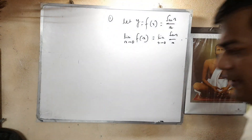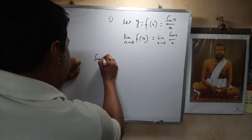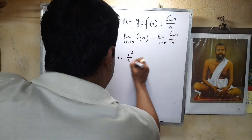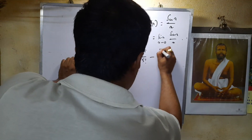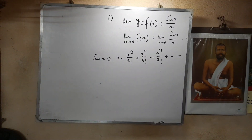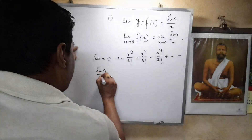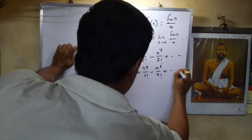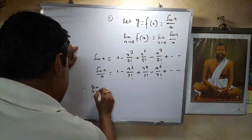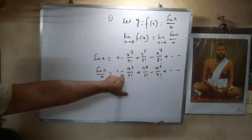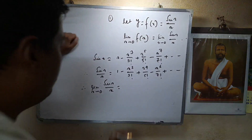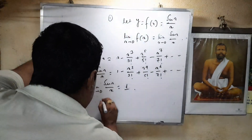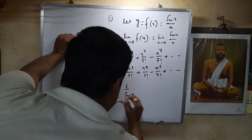From Euler's theorem, if x is very small, we can expand sin x as an infinite series: x - x³/3! + x⁵/5! - x⁷/7! + ... Therefore, sin(x)/x = 1 - x²/3! + x⁴/5! - x⁶/7! + ... When x tends to 0, all higher terms become 0, giving the result 1. Therefore, limit x tending to 0 of sin(x)/x = 1. This is the most important formula.